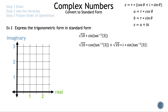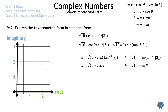The next step is to find a and b so we can write our complex number in standard form. So a = √10·cos(tan⁻¹ 3) and b = √10·sin(tan⁻¹ 3). So r = √10 and θ = tan⁻¹ 3. Since 3 is not on the unit circle, we cannot write an exact value for tan⁻¹ 3. Let's work backwards and write θ instead of tan⁻¹ 3.